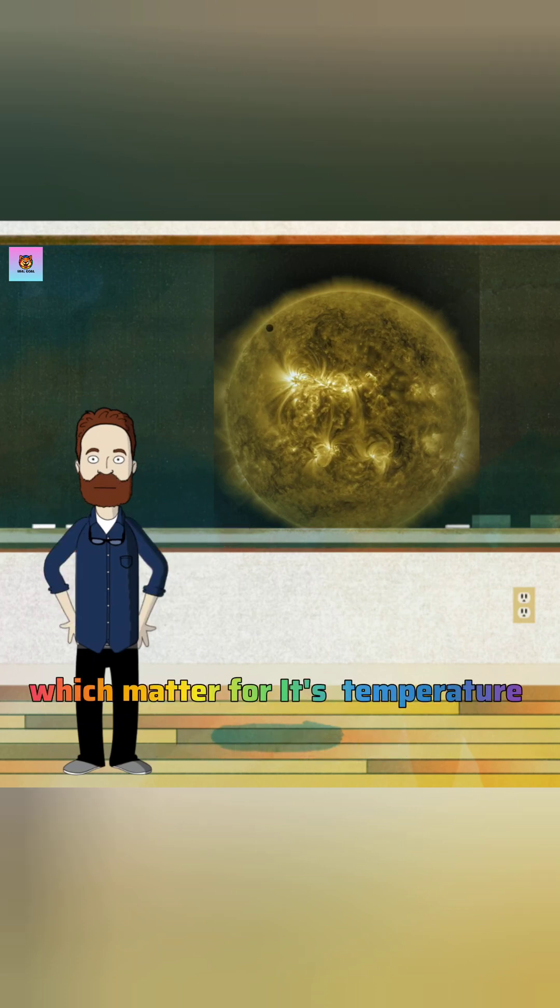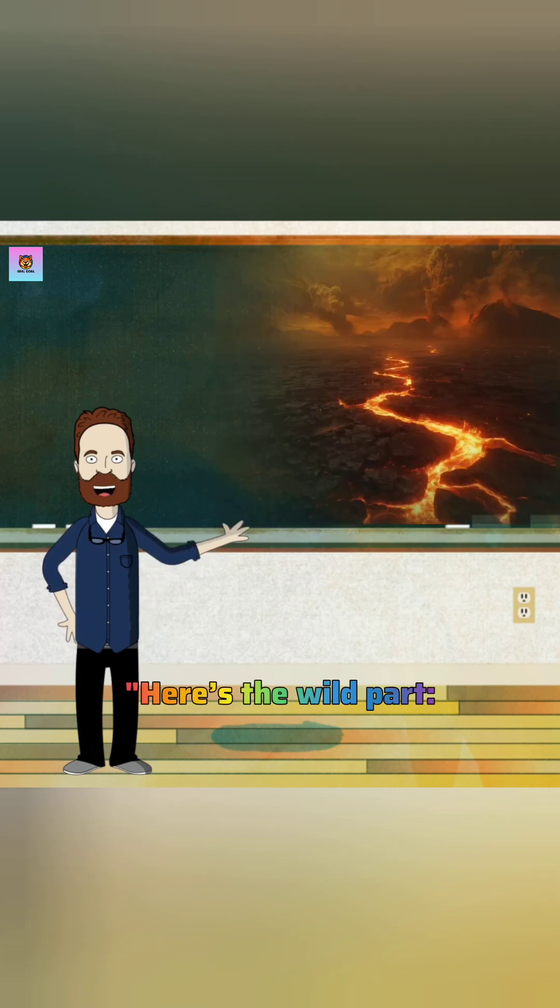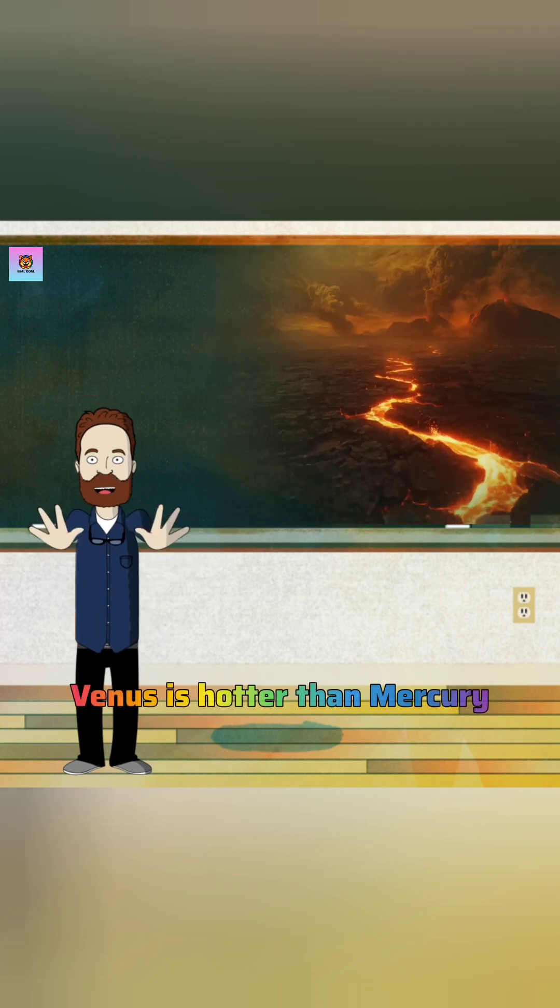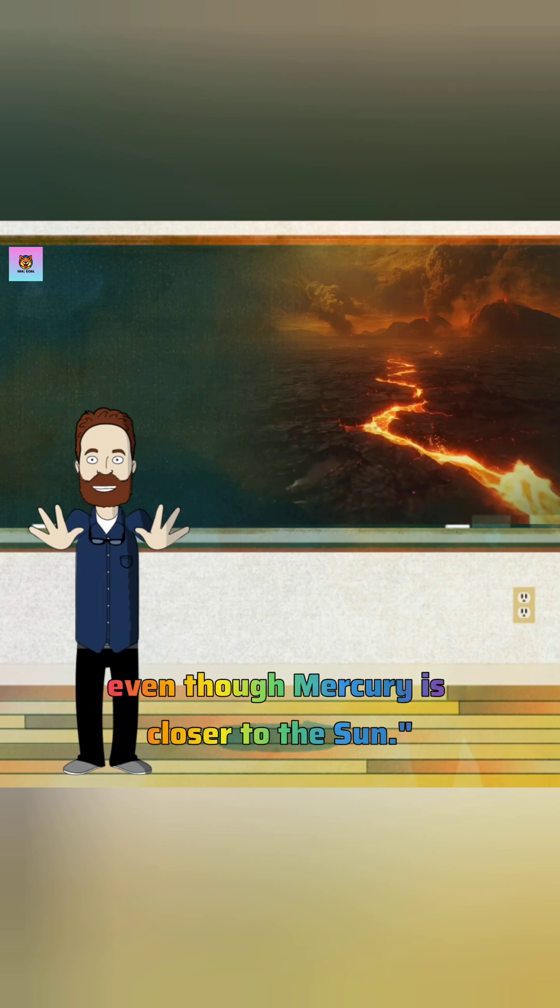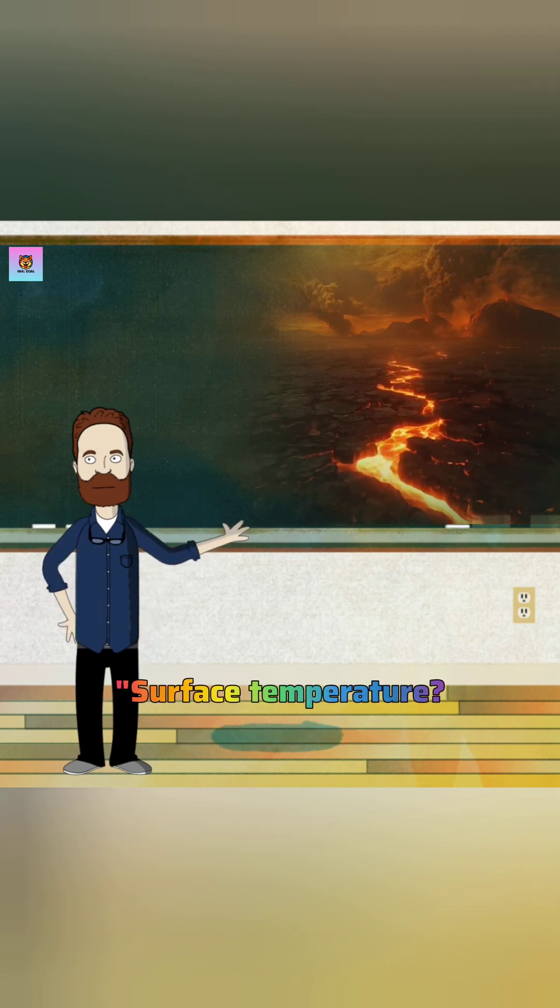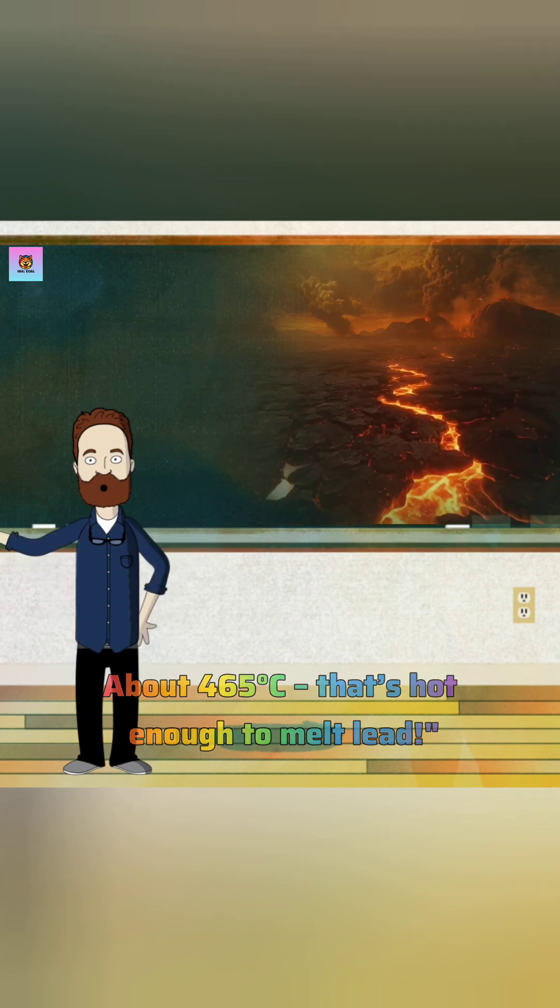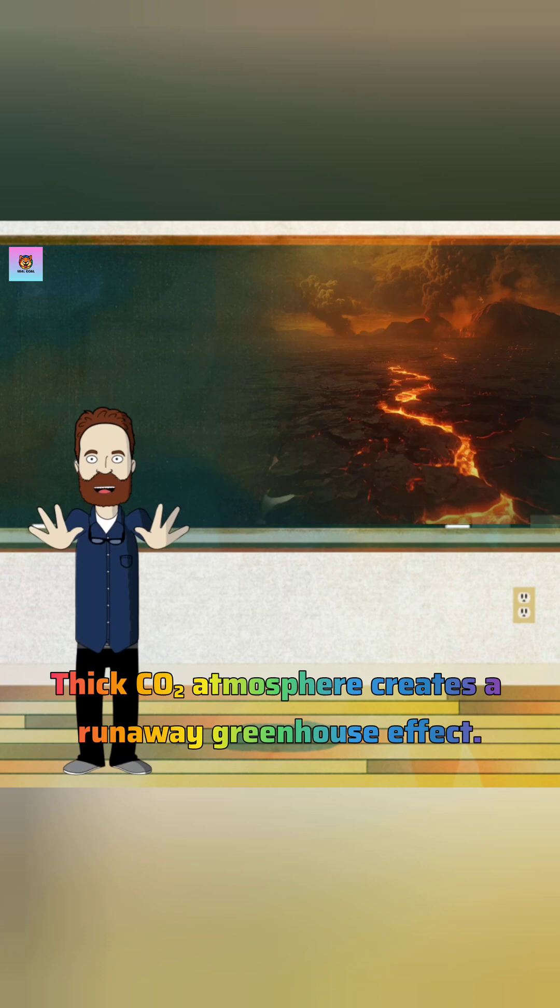Temperature and atmosphere: Here's the wild part, Venus is hotter than Mercury even though Mercury is closer to the sun. Surface temperature about 465 degrees Celsius, that's hot enough to melt lead. Why? Thick carbon dioxide atmosphere creates a runaway greenhouse effect.